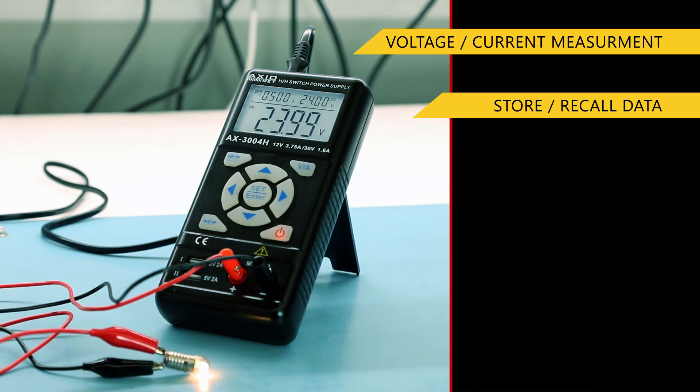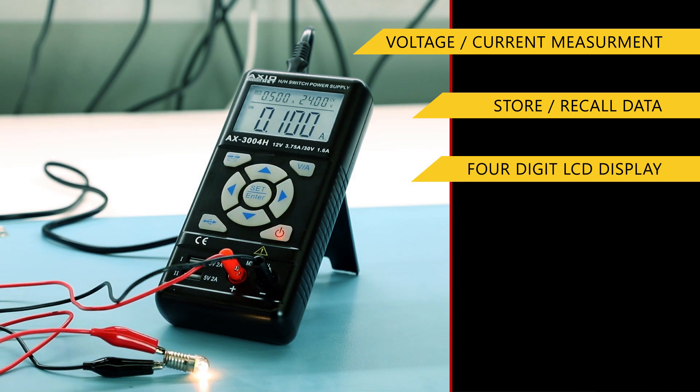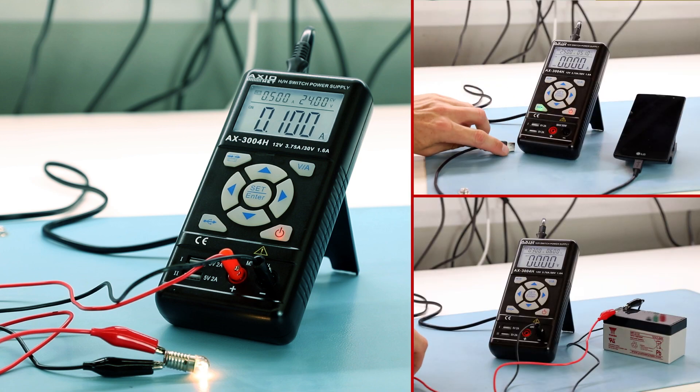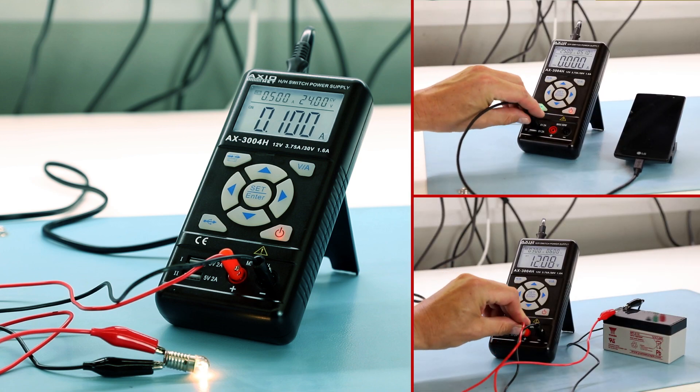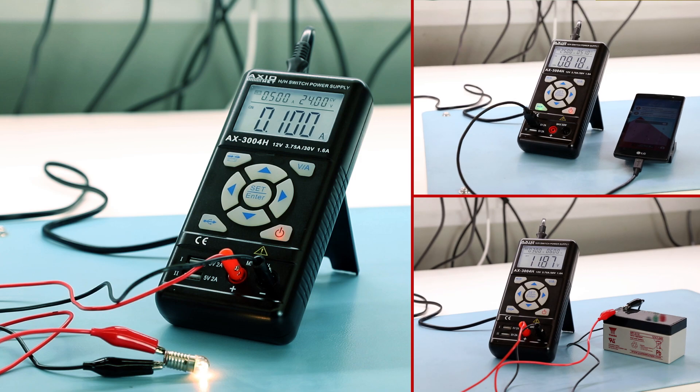The AX3004H also has a four-digit voltage and current meter and compact handy dimension. The AX3004H is an ideal device for various applications requiring different loads.